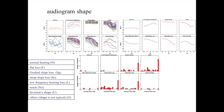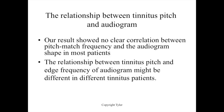We also looked at the audiogram shape, which is perhaps more important for the issue here. We came up with several different shapes: normal, flat, gradual, steep slope, low frequency loss, a notch, and inverted U. These are the patients that fell into each of those groups, the average audiograms from each group, and then the corresponding pitch match frequencies. Again, we were not able to document that any particular audiogram shape had a predominant pitch match frequency in any particular region. So we showed no clear correlation between the pitch match frequency and the audiogram shape in most patients.